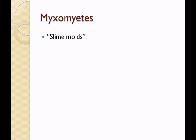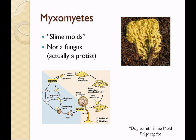The myxomycetes are the slime molds, but they're really not molds — they're actually protists, and they're very interesting. Perhaps you've seen this on your mulch; it looks like your dog vomited. This is called the dog vomit slime mold, Fuligo septica. The structure you see is actually the feeding plasmodium, which is produced by slug-like amoeboid cells that come together into this feeding plasmodium.